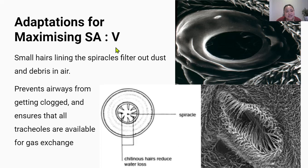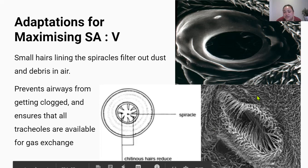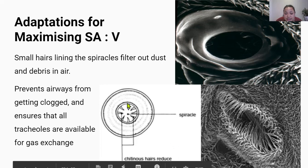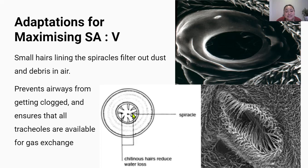The second adaptation for maximizing surface area to volume ratio are the small hairs or bristles that line the inside of the spiracles. These bristles filter air as it enters to prevent dirt and debris from clogging the airways, which would reduce the surface area available for gas exchange. This is an important adaptation for cricket survival because they inhabit dusty environments, and dirt and dust particles could seriously damage the delicate respiratory surfaces of the tracheals.